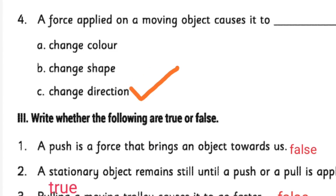Fourth question: a force applied on a moving object causes it to blank. The options are change color, change shape, and change direction. Definitely direction is changing, so you have to write 'change direction'.